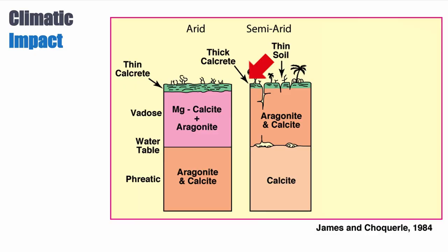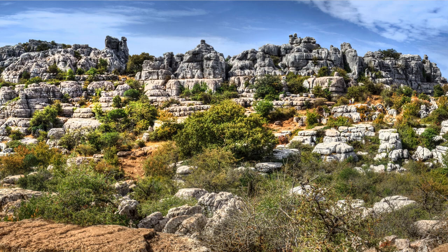At the surface, because we have more water, we have the potential for thicker calcrete — thicker crusts of cement due to evaporation — because we are still in semi-arid conditions. We can actually have thin soil starting to form on top of this calcrete. An example of this would be southern Europe, like Spain, where you have the formation of karst, but this karst is not extensive and you can still recognize a lot of the features.